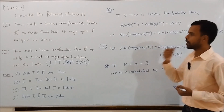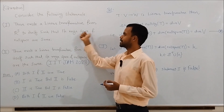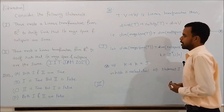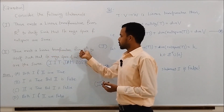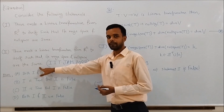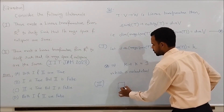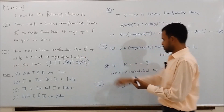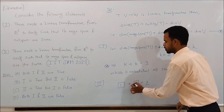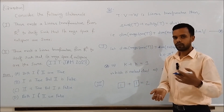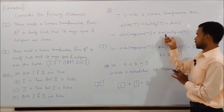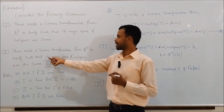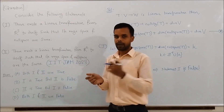Statement 1 is false — there does not exist a linear transformation from R3 to itself such that its range space and null space are the same. Now for Statement 2, we need dimension of range space of T plus dimension of null space of T to equal dimension of V, where V is R2, a two-dimensional space. This is possible if we take dimension of range space equal to dimension of null space equal to 1, so the equation holds.